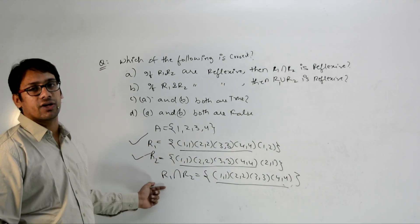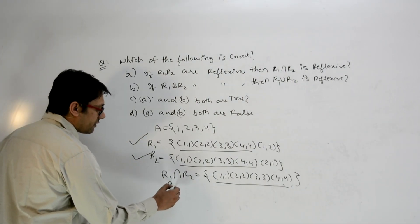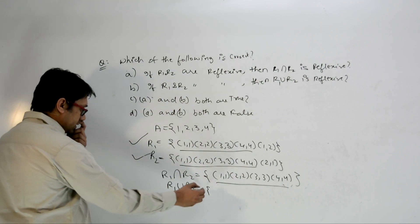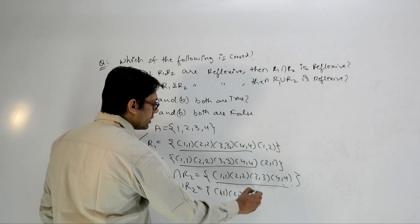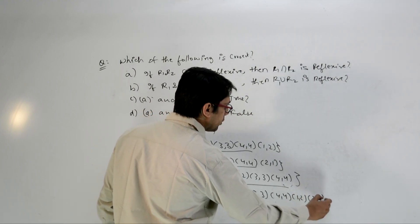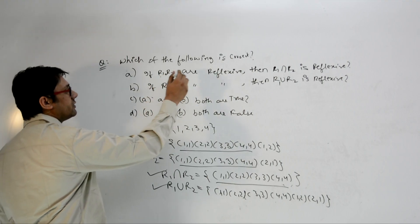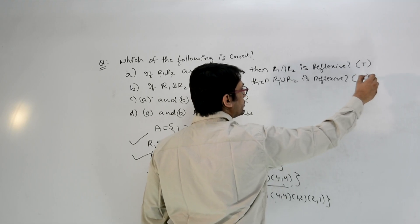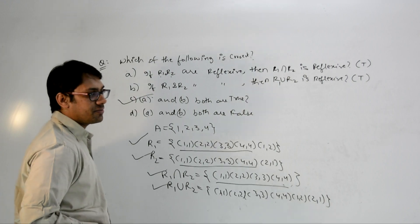If R1 and R2 are reflexive, then R1 ∩ R2 will always be reflexive. Similarly, R1 ∪ R2 = {(1,1),(2,2),(3,3),(4,4),(1,2),(2,1)}, which is also reflexive. Therefore, if R1 and R2 are reflexive, then both R1 ∩ R2 and R1 ∪ R2 are reflexive. Option C is correct.